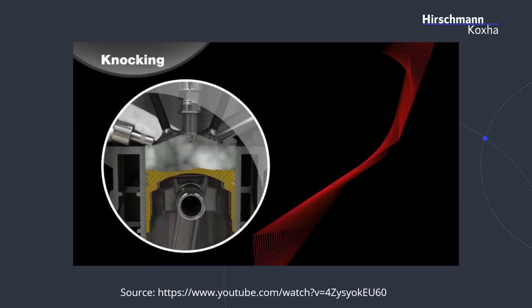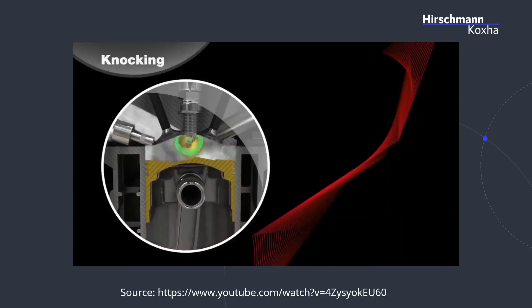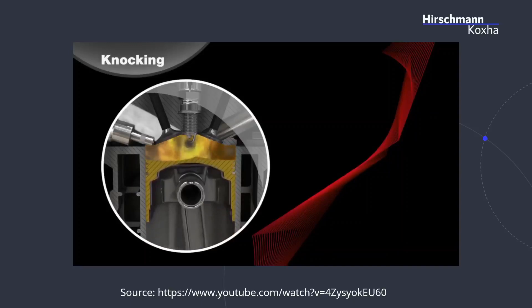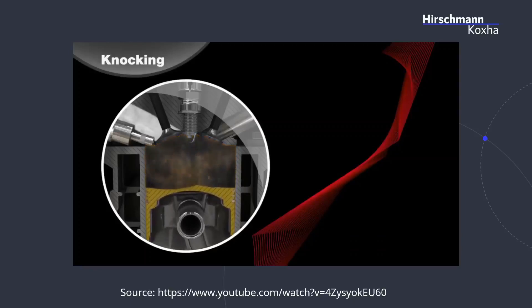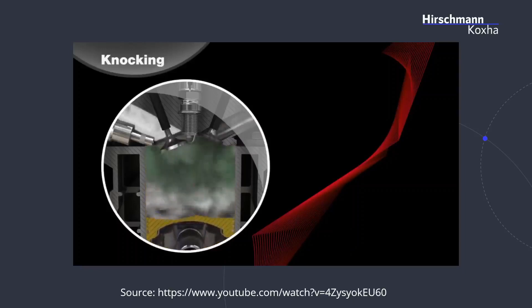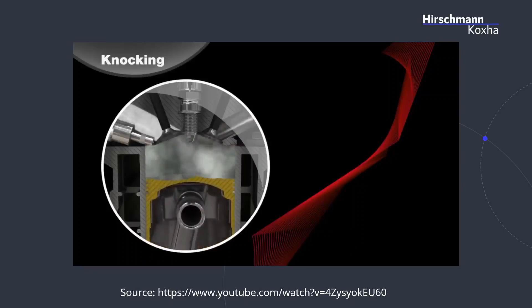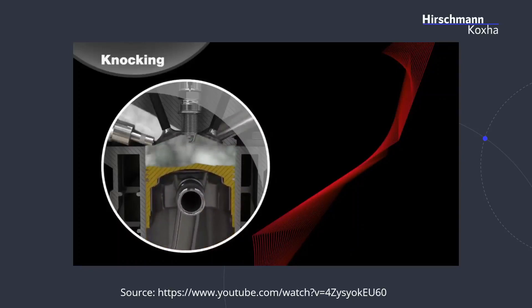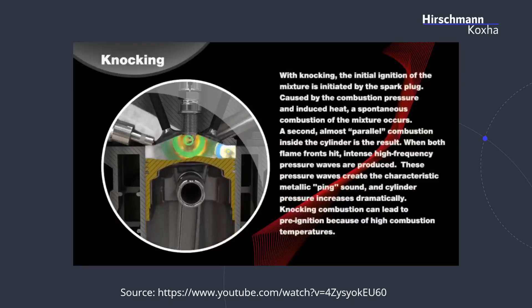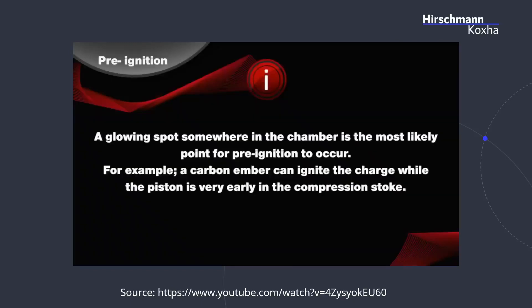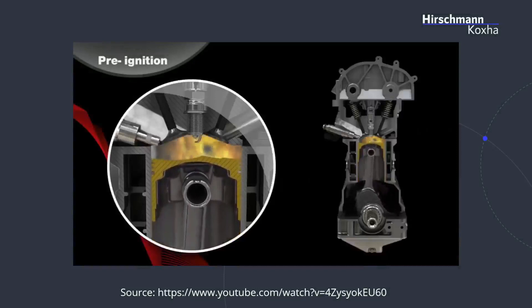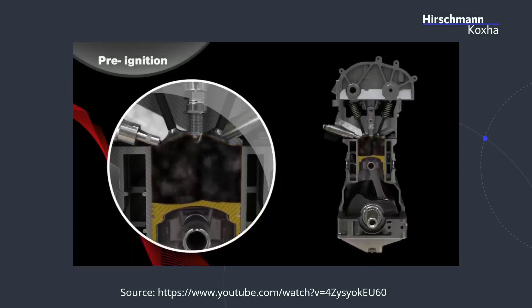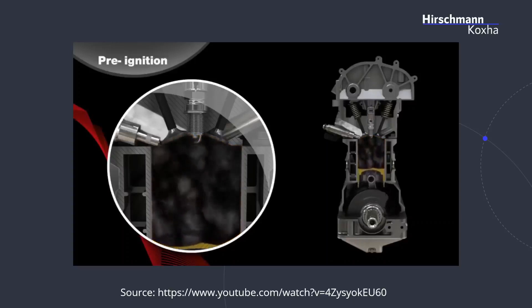Now the knocking. This is the compression stroke. Now we want to ignite, which we do — and now you can see on the right, as previously shown in my picture, that we have a second spontaneous ignition, which we don't really want. Let's take a look at this once more. Now the compression stroke, around now we want to ignite it. And on the right again, you will see the knocking. And now we have pre-ignition, which is even worse — this is when not the spark plug ignites the mixture, but it just happens spontaneously. This happens when you choose a too hot spark plug, as an example.